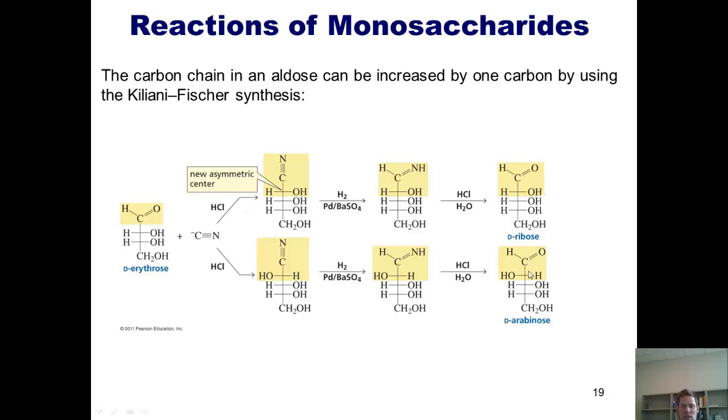In my Fischer projection here at the bottom, this molecule, D-arabinose, has the OH pointing to the left three-dimensionally. The product of the sequence on the top has the OH at this stereocenter pointing to the right three-dimensionally. So you might look at these two different stereoisomers and ask yourself the question, is there a name for these two different kinds of stereoisomers?